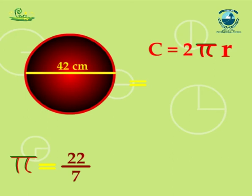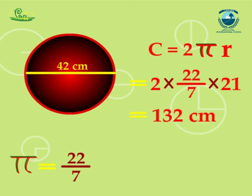Hence, the circumference of the circle will be c equals 2πr, that is equal to 2 multiplied by 22/7 multiplied by 21, that is equal to 132 cm.